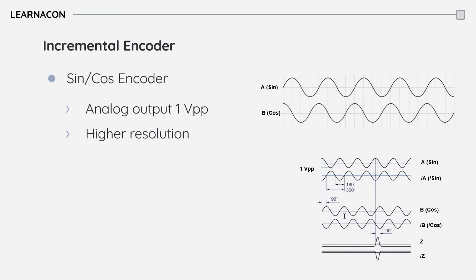One limitation in the application of sine encoders is the frequency of the encoder output versus the bandwidth that receiving electronics can handle. When a sine encoder with a very high line count is operated at very high speed, the output frequency of the encoder may exceed the bandwidth that the drive or controller can process. This can result in limitations in some applications.